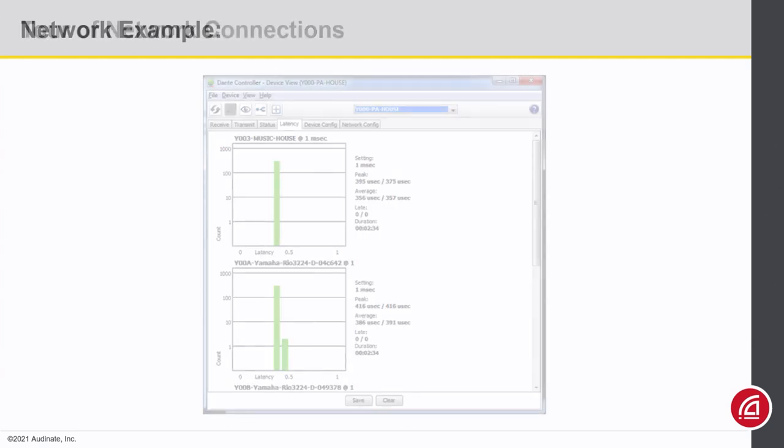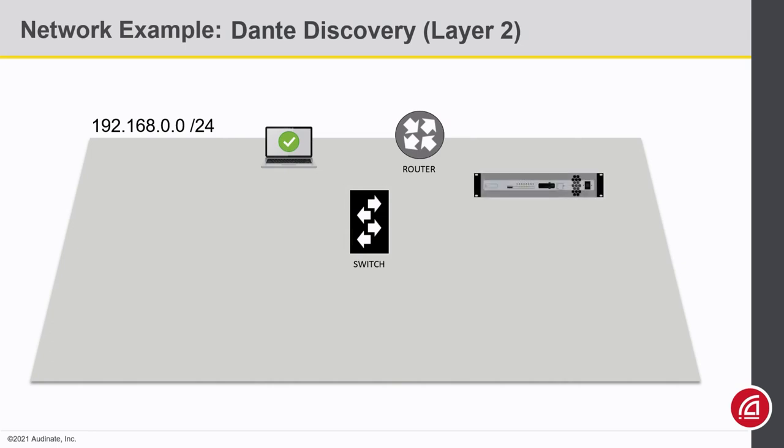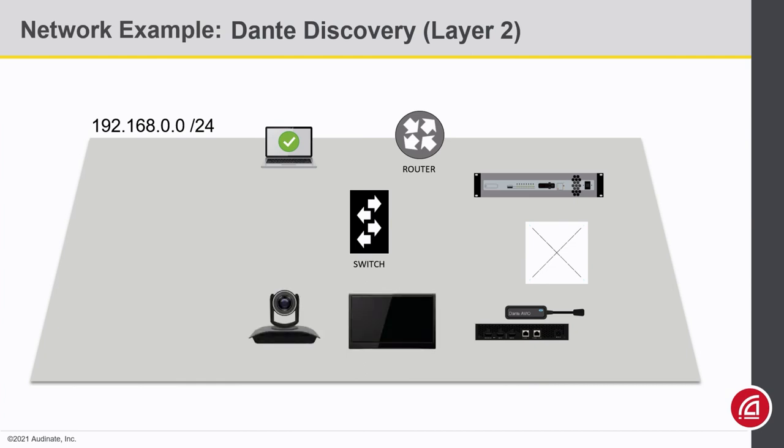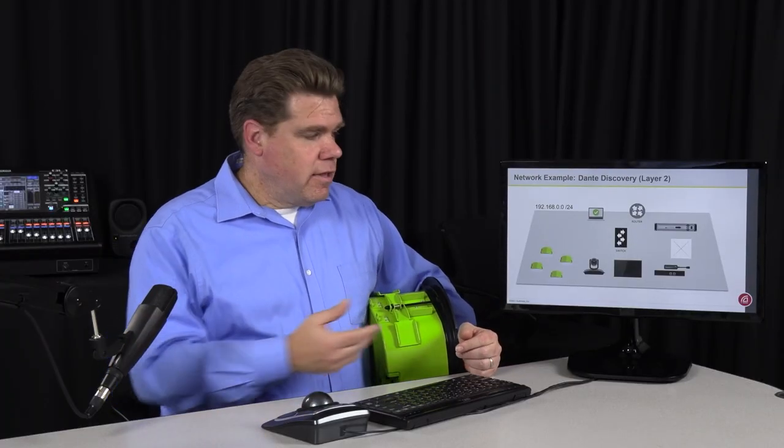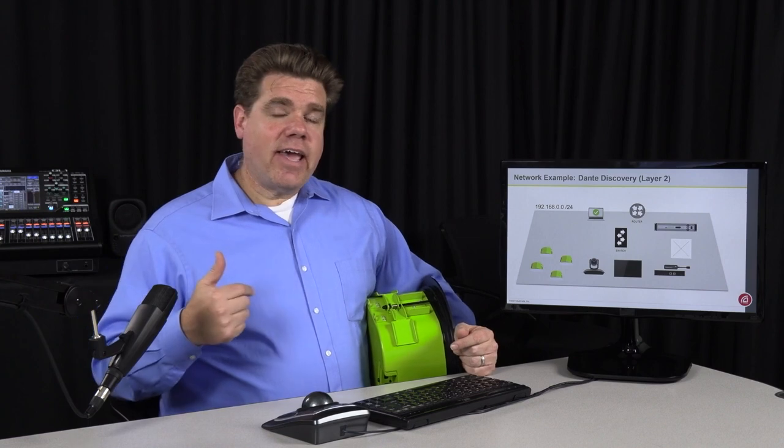Let's draw a simple conference room. Suppose we have a DSP, a beamforming microphone, an interface for your computer, a camera and a TV for video conferencing, and a set of speakers. One question that comes up is: if I have multiple ceiling speakers like this, do I need to have multiple network drops up there? The answer is no. Dante doesn't drive speakers — Dante signal is usually sent to an amplifier, and the amplifier then feeds speakers.